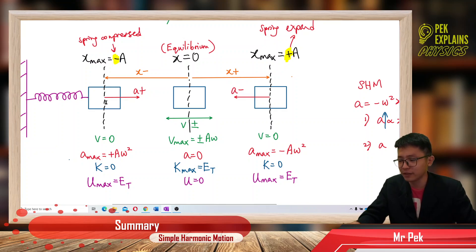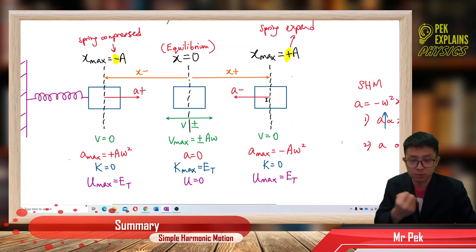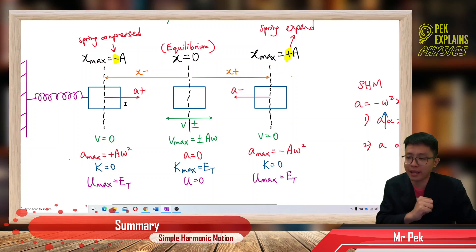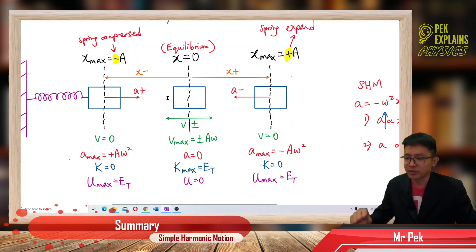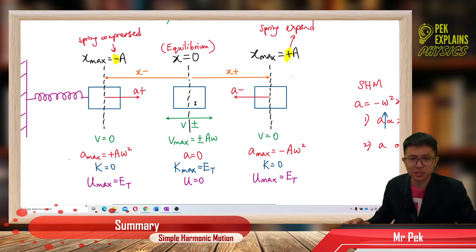When the block goes to the right, it extends the spring, so the spring wants to restore back and pulls it back. When you compress the spring, it pushes back outward. That's why the object keeps oscillating left and right non-stop — the spring always tries to restore the object back to the equilibrium position.